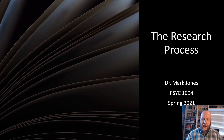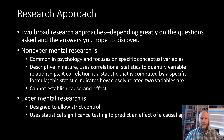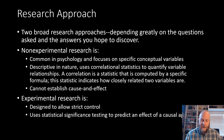Let's move on and talk about different types of approaches to research and different processes we can employ. There are two broad approaches to research in the behavioral sciences — and behavioral sciences is synonymous with psychology and some related fields. Which of these two basic approaches you utilize depends greatly on the questions you're asking and what types of answers you hope to discover. We're going to break them down as experimental and non-experimental.